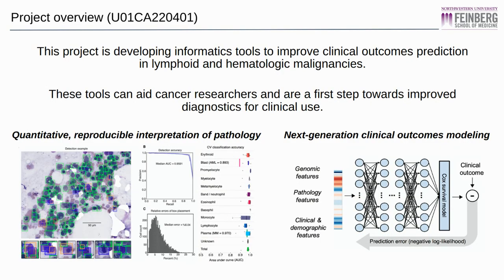We are developing tools to improve prediction of clinical outcomes in lymphoid and hematologic malignancies. These tools can aid clinical and basic science investigations and are a first step towards improved diagnostics for clinical use. To meet these goals, we are developing algorithms to provide quantitative and reproducible interpretations of histology images that pathologists use to classify these malignancies.